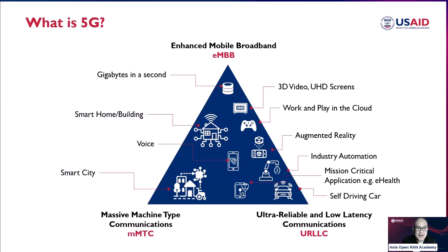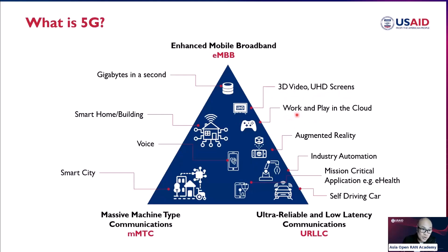When we talk about EMBB — Enhanced Mobile Broadband — it simply means higher capacity and faster throughput, like gigabit per second, up to one gigabit per second. With EMBB, you can stream or watch 3D video or ultra-high-definition content. You can also work and play in the cloud. That's the main benefit of EMBB.